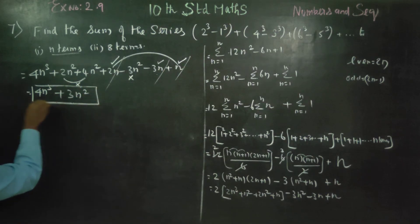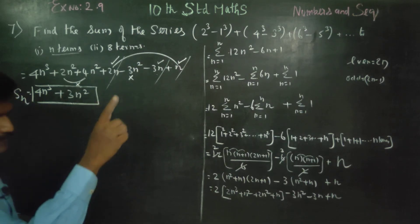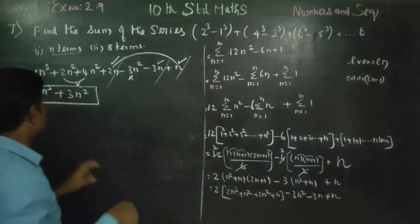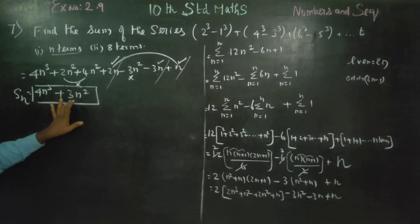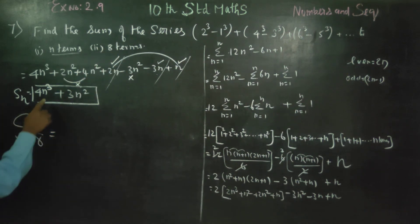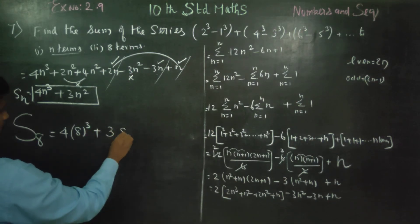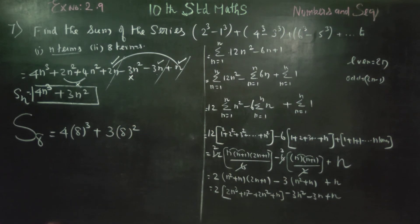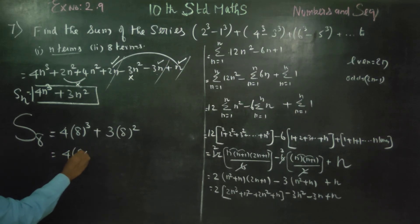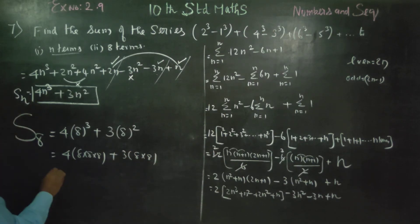This is your answer. The sum of the series up to n terms: Sn is equal to 4n cube plus 3n squared. That is the final answer for n terms. For 8 terms, substitute n equals 8: S8 equals 4 into 8 cube plus 3 into 8 squared.